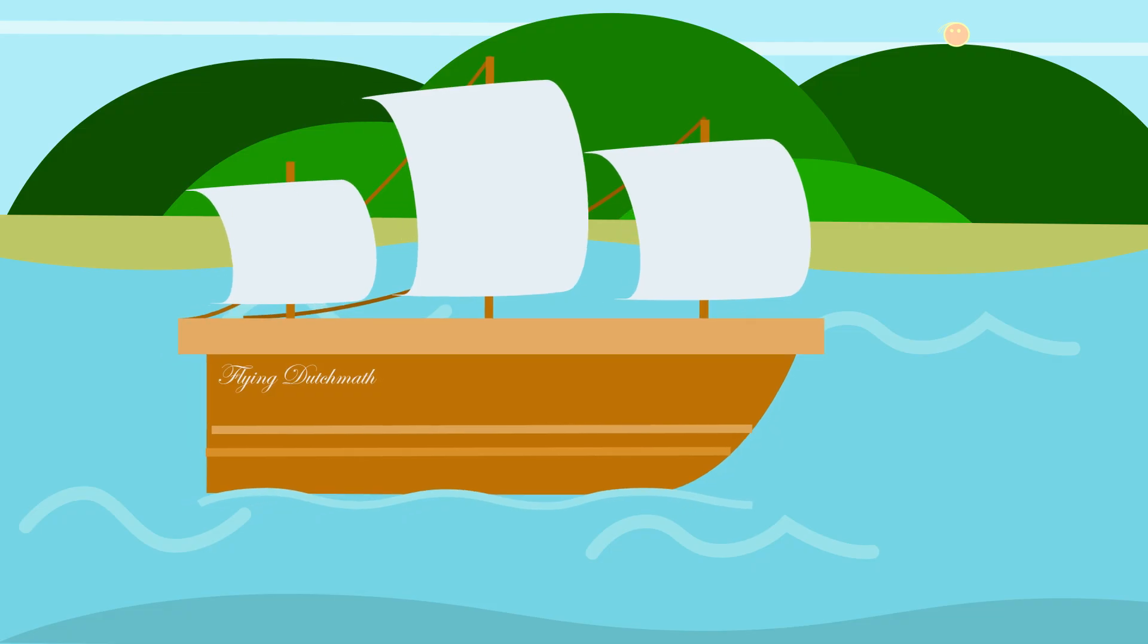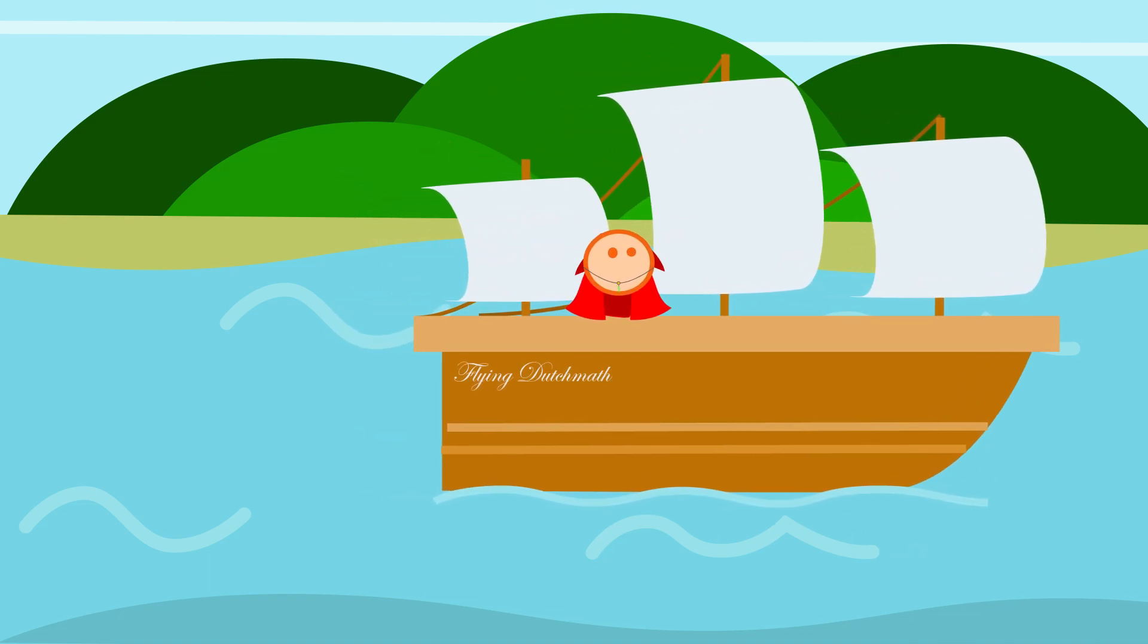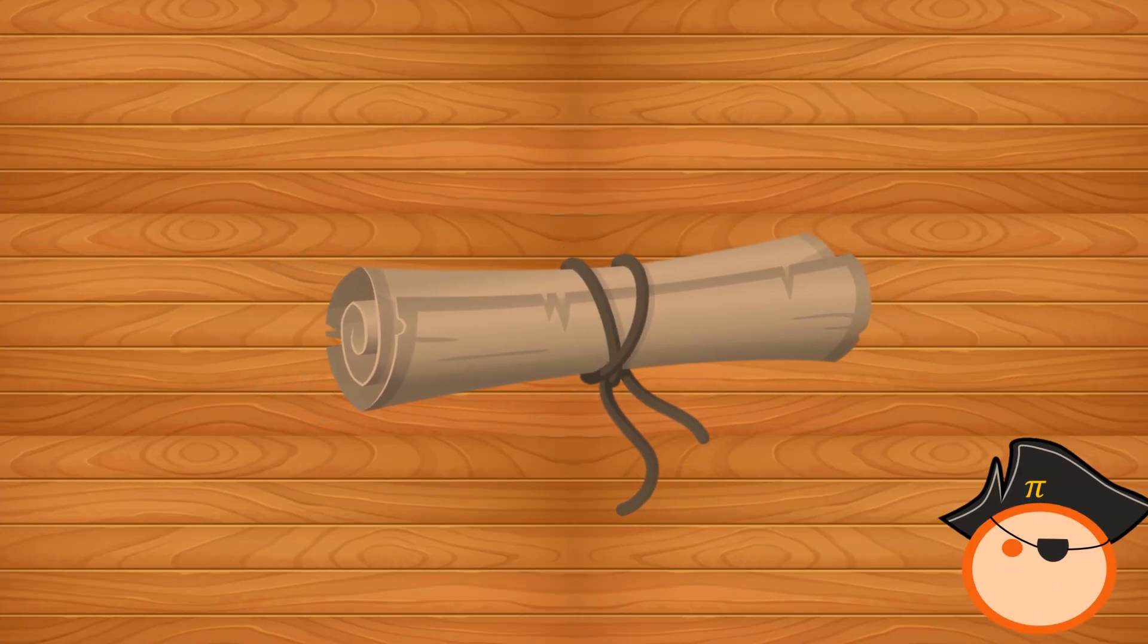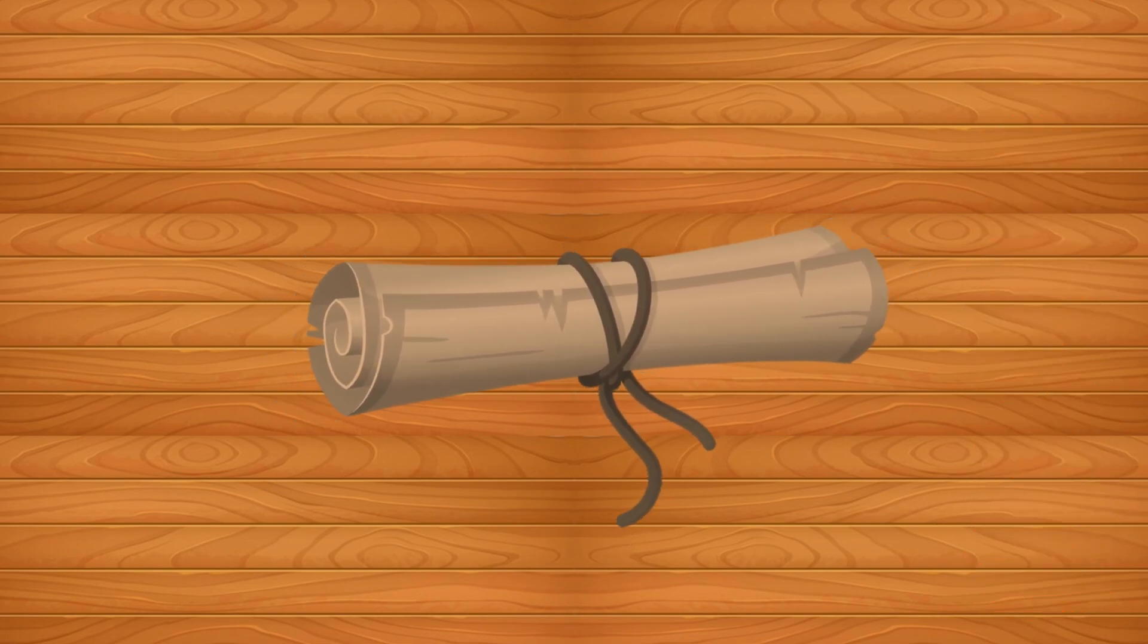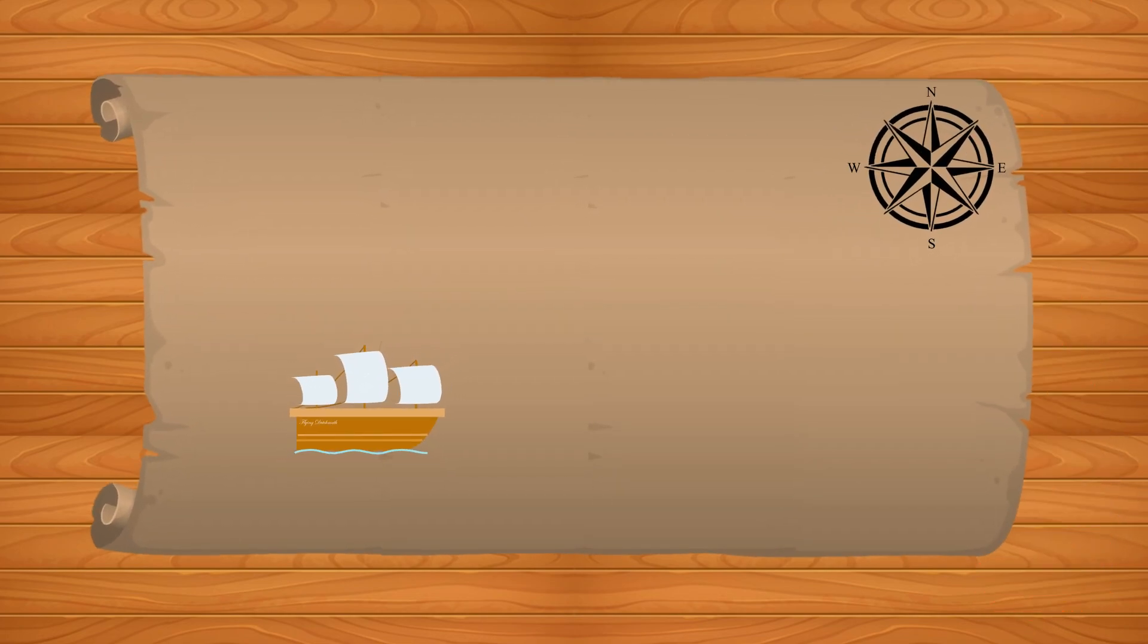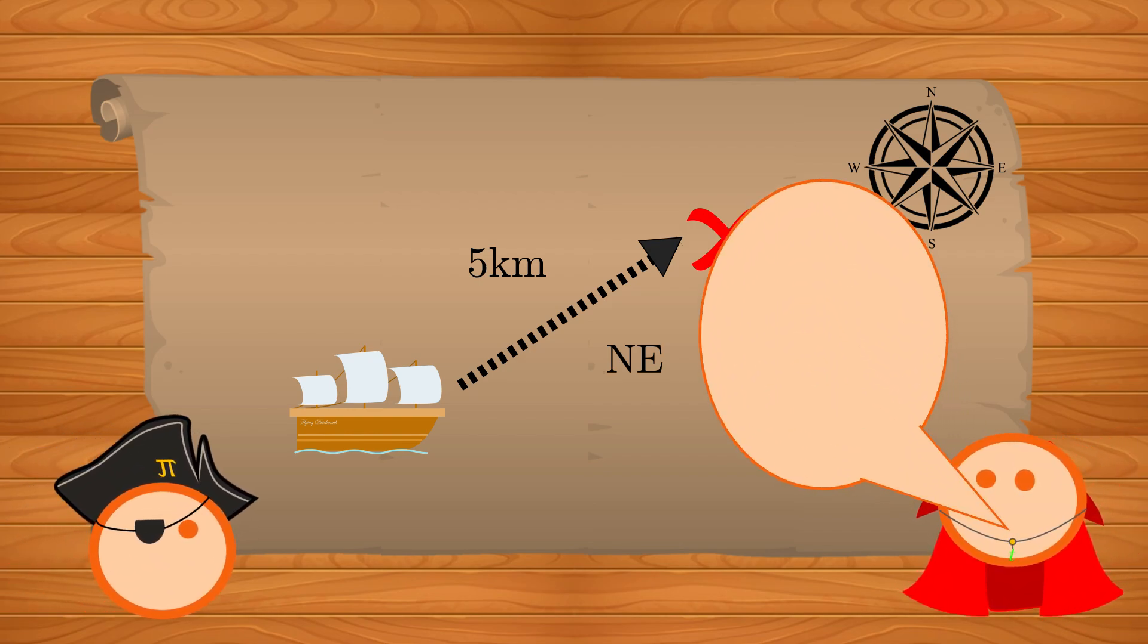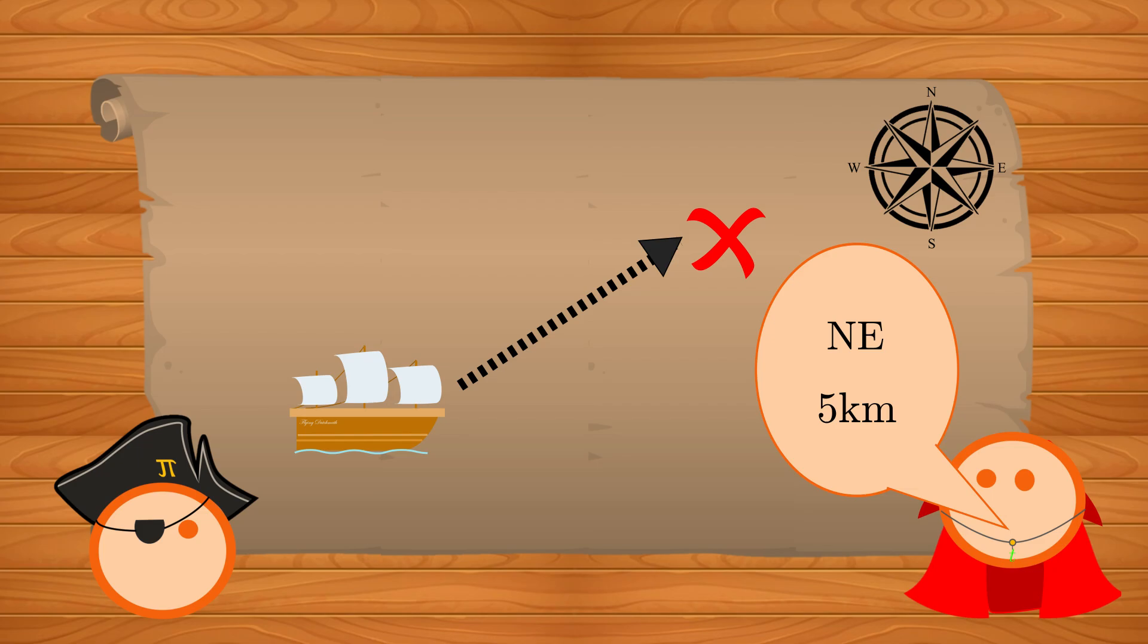On your journey, you find yourself aboard a ship named the Flying Dutch Math. The captain approaches you and hands you over a map. And since you're so curious, you open the map and you see the ship and an X on it. The captain wants you to tell him how to get to the treasure. According to the map, the treasure is 5km away and in the north-east direction. So you tell the captain to head north-east and travel 5km.